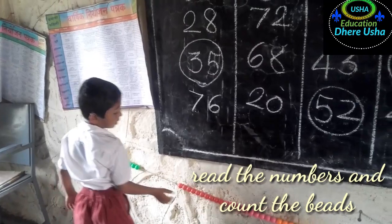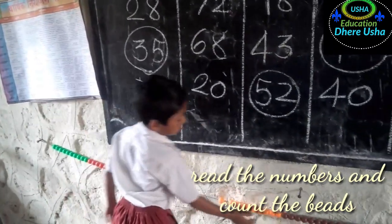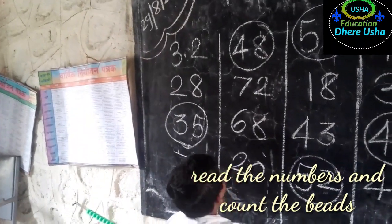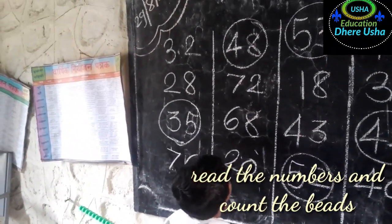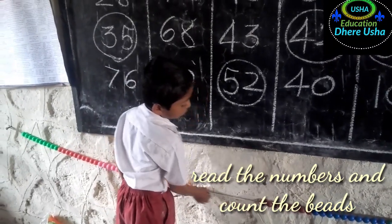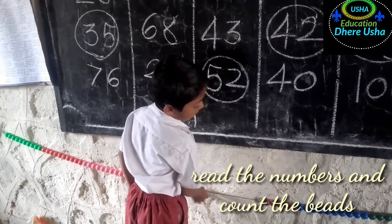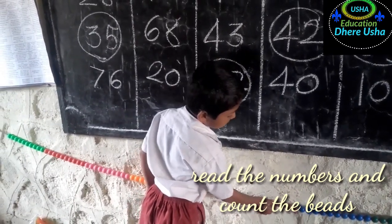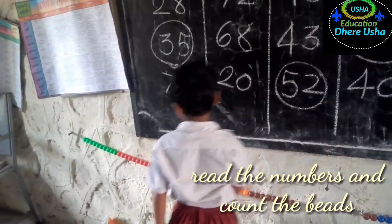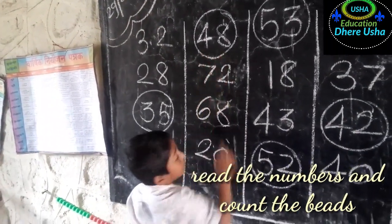One ten, two tens, three tens, four tens. How many tens? Four tens. How many units? Eight units. One, two, three, four, five, six, seven, eight. These beads are forty-eight. Very good.